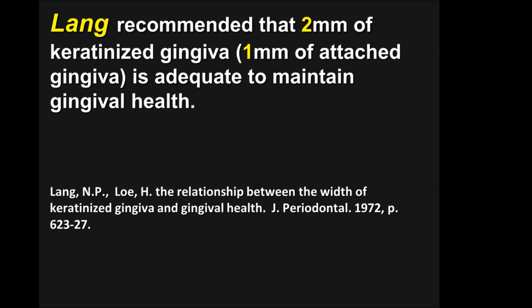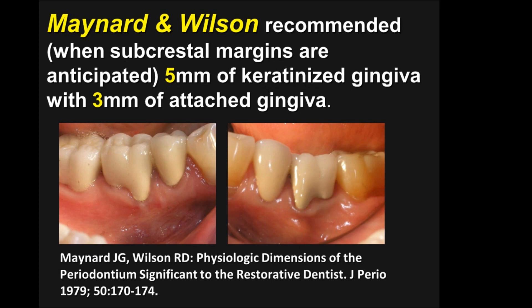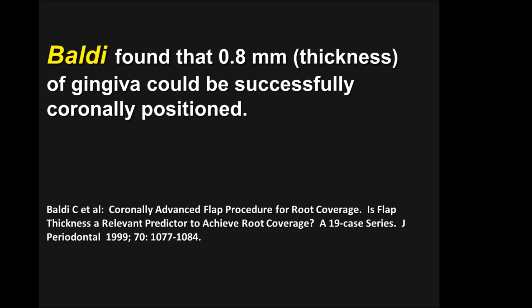I don't disagree with Dr. Lange, but I think this is age-appropriate. Taking a 20-year-old who will live to be 90 or 100 with only one millimeter of attached gingiva — the likelihood of maintaining that for many years with even minimal toothbrush abrasion is very questionable. Gary Maynard and Dick Wilson in the 1970s said that when subcrestal margins are anticipated, five millimeters of keratinized gingiva with three millimeters of attached gingiva is the recommendation. The criteria for a coronal position flap is three millimeters of keratinized tissue vertically.